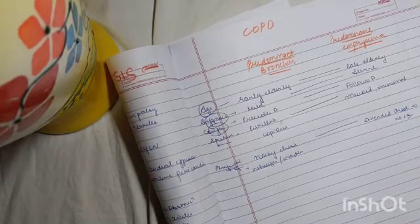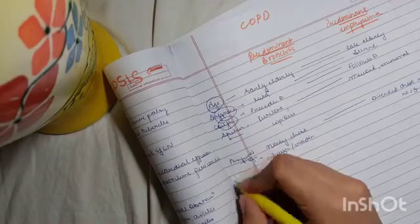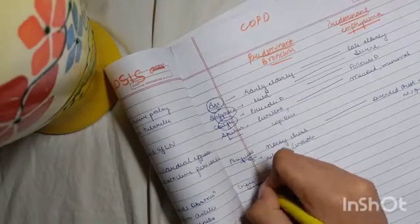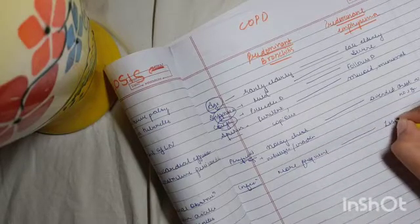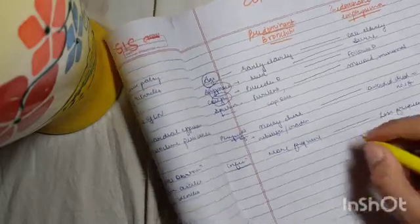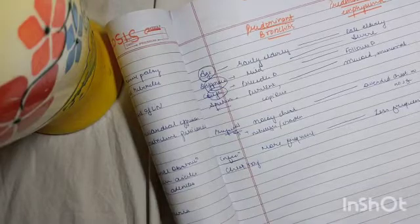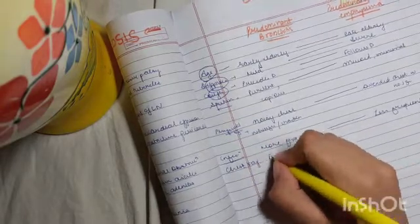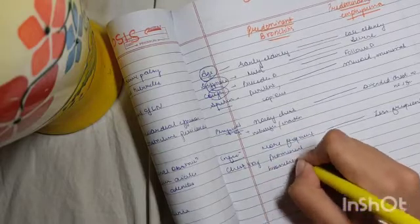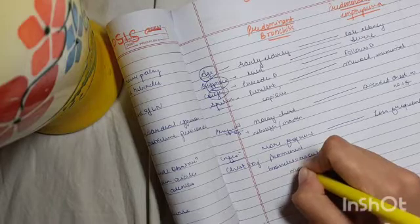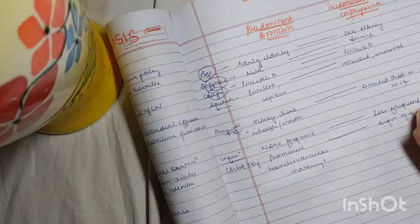Alright, then coming to the next feature: infection. Infection is more frequent in bronchitis and less frequent in emphysema. Then chest x-ray: in chest x-ray, you will see prominent bronchovascular markings in bronchitis. In emphysema, we will see signs of emphysema.